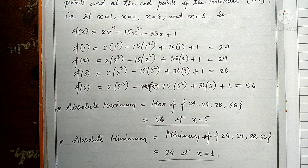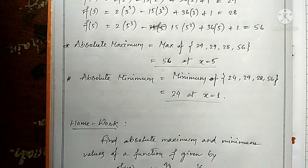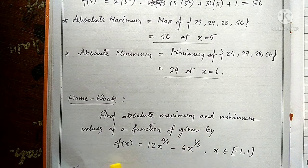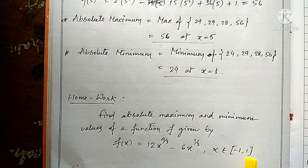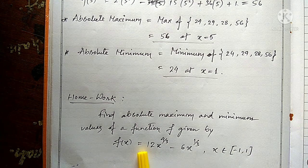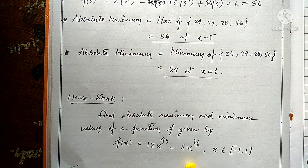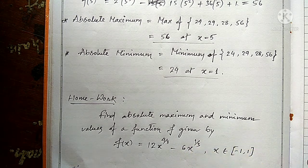This is a very easy method. Homework: find the absolute maximum and minimum values of the given function on the interval [-1, 1]. Find the critical points, check they fall within [-1, 1], then evaluate the function at the critical points and endpoints to get the absolute maximum and minimum.